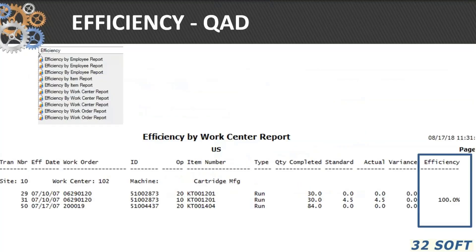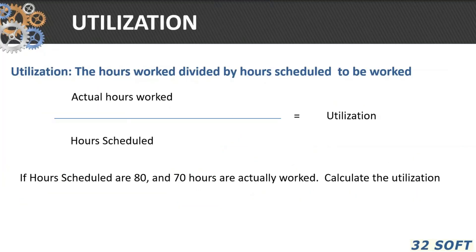QAD gives you the efficiency by work center report, so you can look at a particular work center and see what QAD is calculating. Utilization is the hours worked divided by the hours scheduled to be worked.